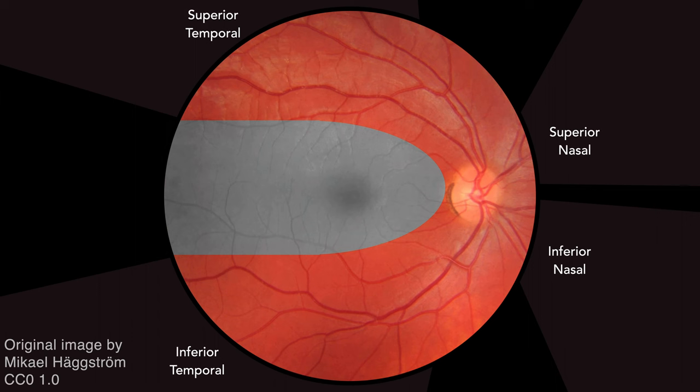Now we will focus on the blood vessels of the retina. The central retinal artery and vein diverge from the optic disc in four branches: superior temporal, inferior temporal, superior nasal, and inferior nasal. The arterioles are lighter colored and more narrow than the venules. Vessel indentation is not normally present where arterioles and venules cross.